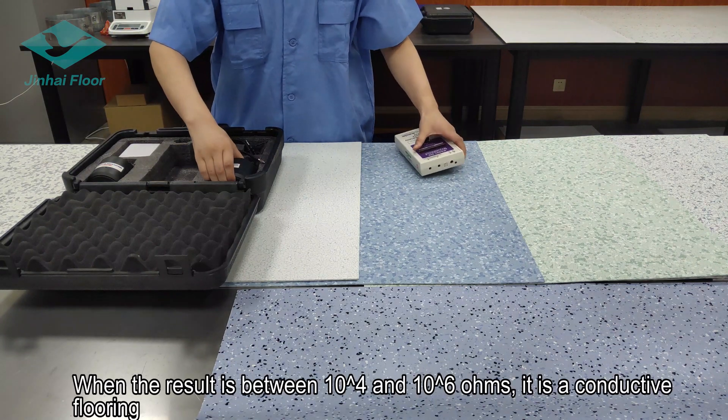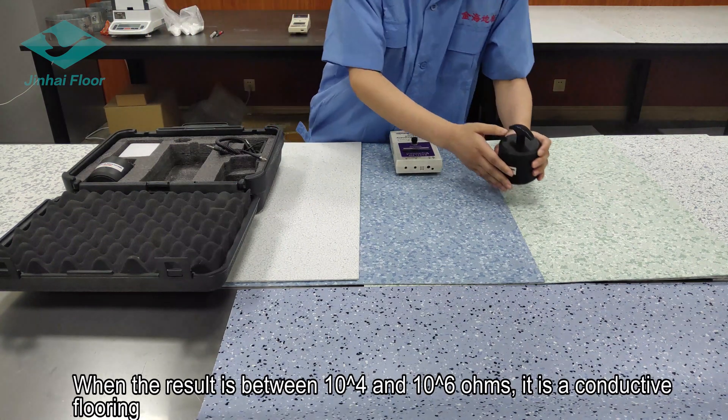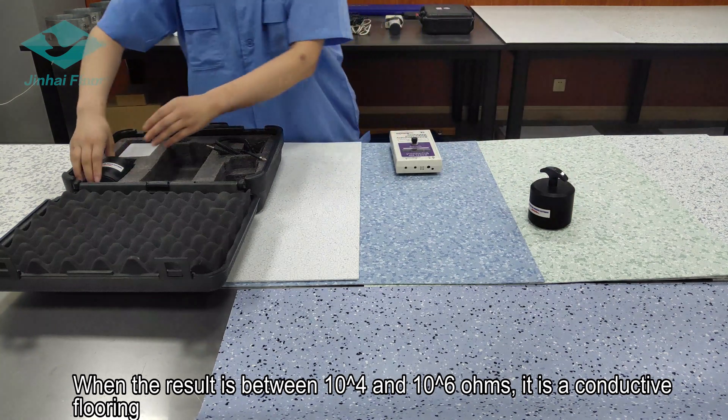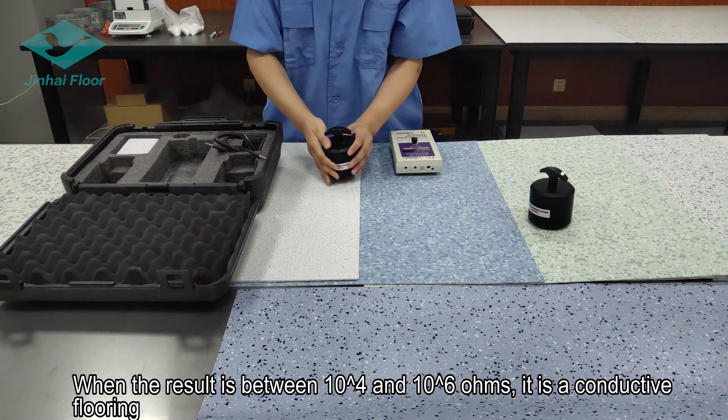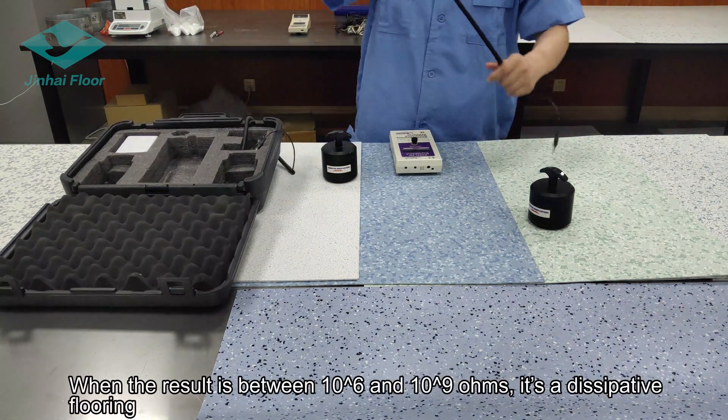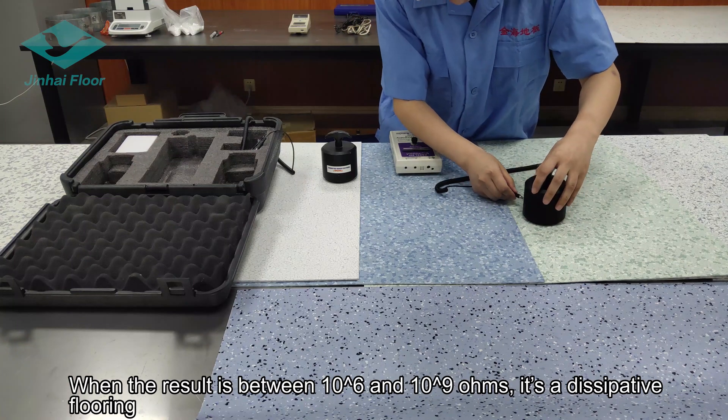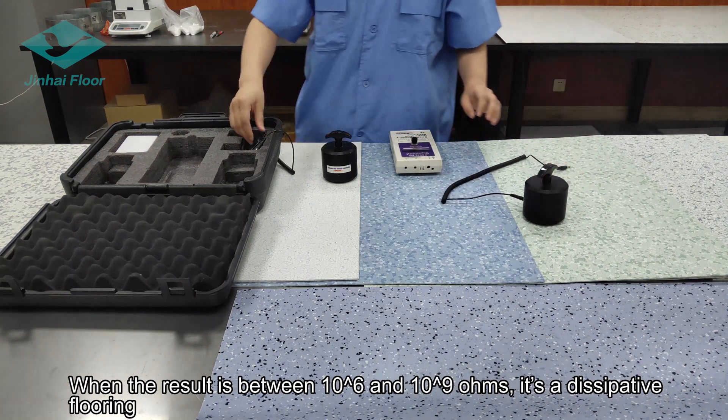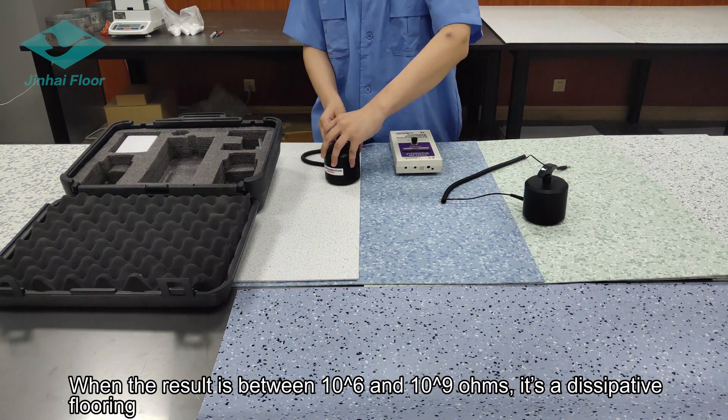When the result is between 10 to the 4th and 6th ohm, it's a conductive flooring. And when the result is between 10 to the 6th and 9th ohm, it's a dissipative flooring.